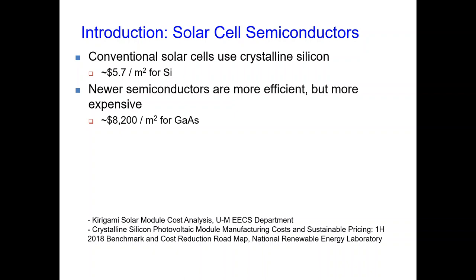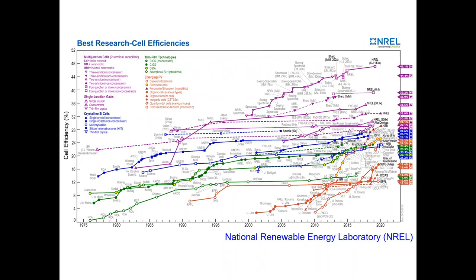The goal of this project was to explore how solar cells can be designed to minimize the amount of semiconductor required, using a combination of different methods. Conventional solar cells use crystalline silicon, which is relatively cheap. However, there exist alternative semiconductors which are both more efficient and more expensive. Gallium arsenide is one such option. This plot shows different semiconductors as well as their efficiencies throughout time.